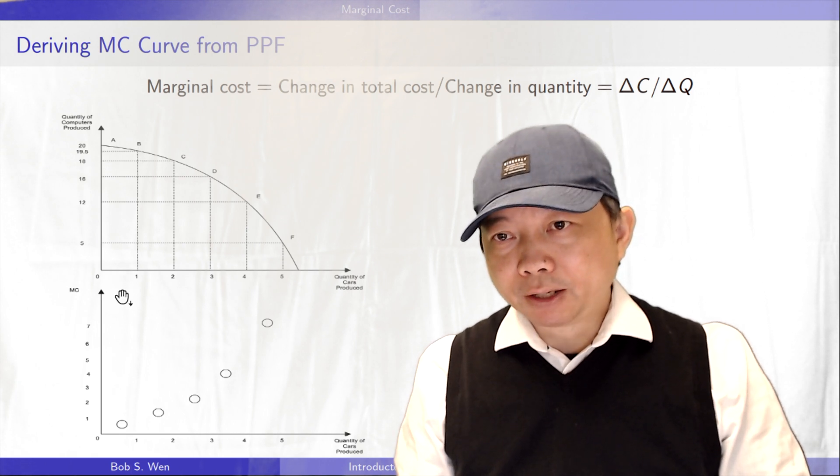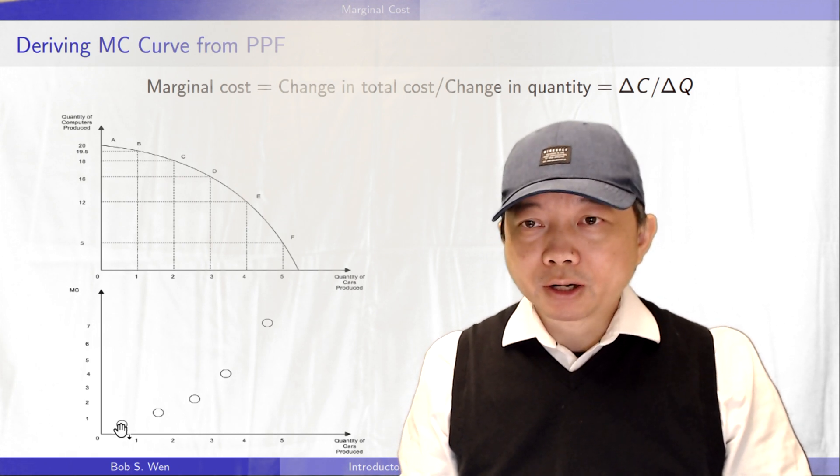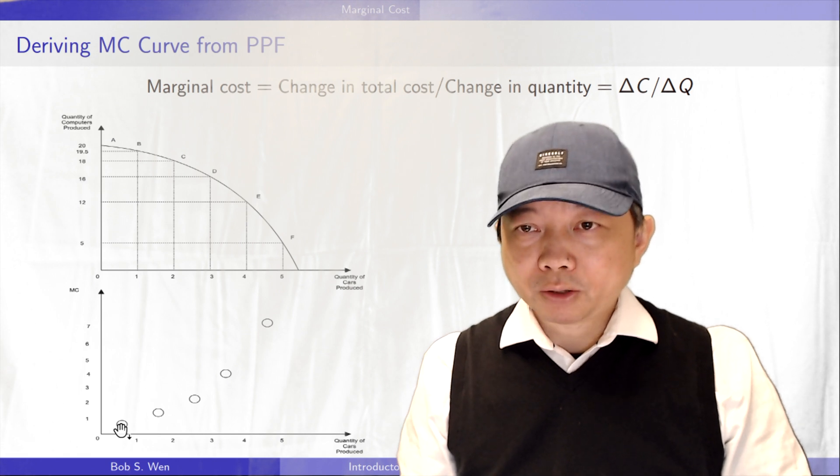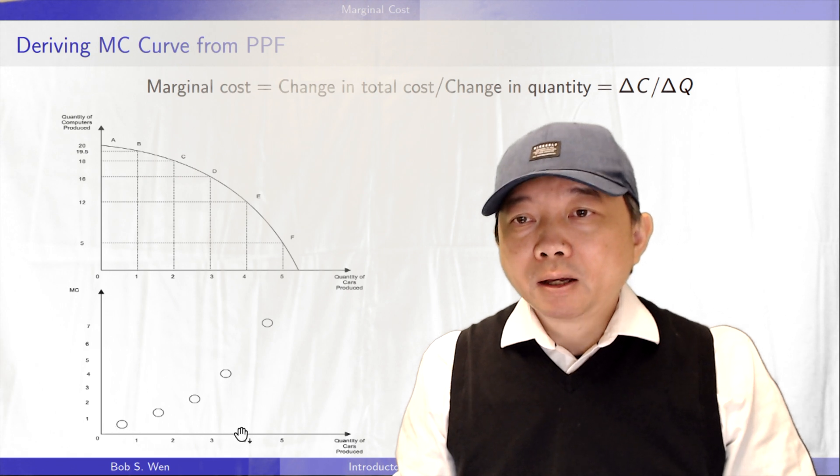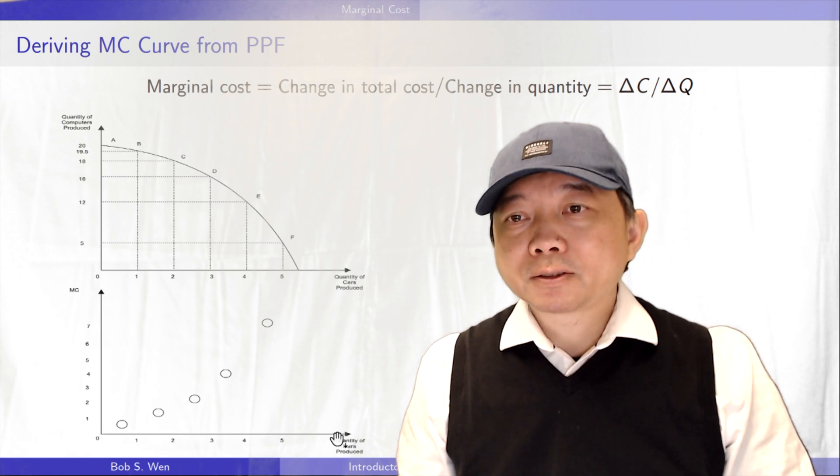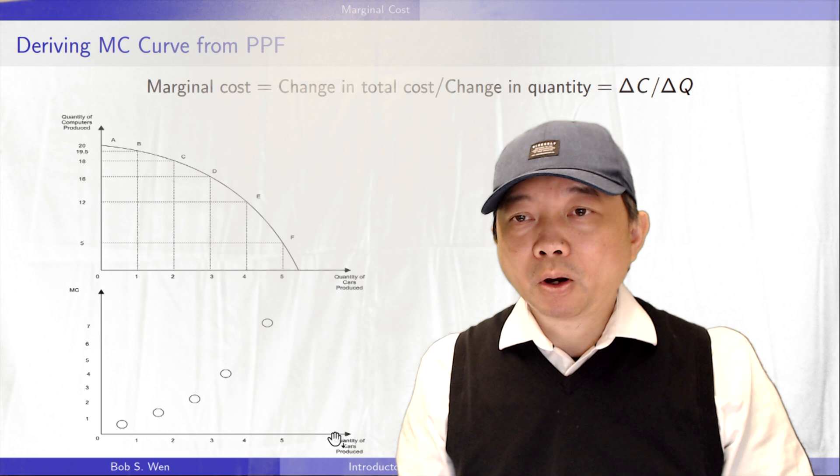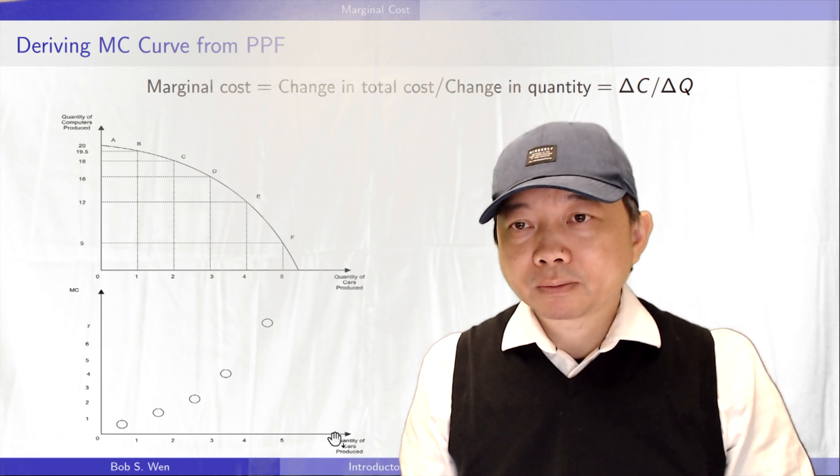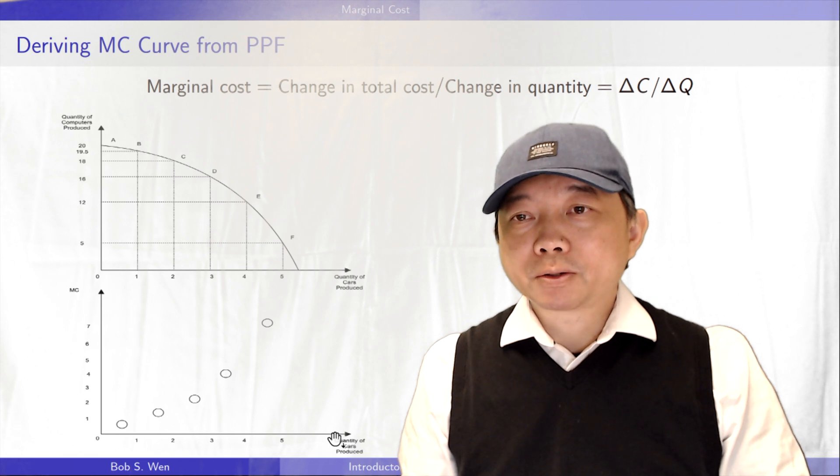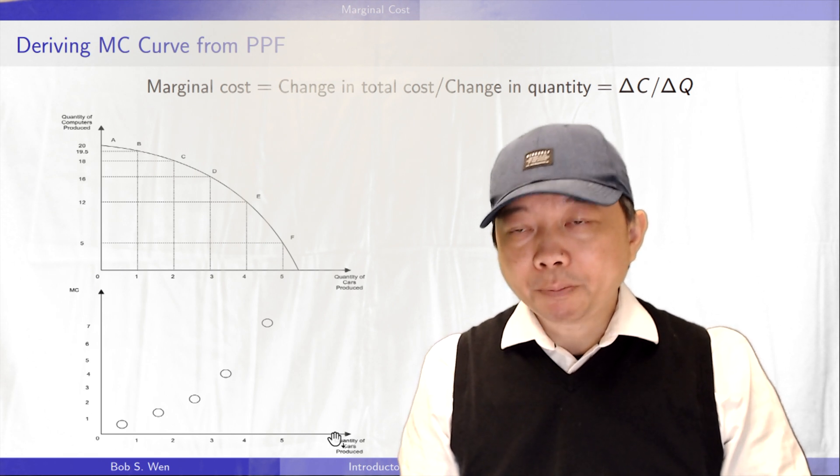We could calculate the slope of each point and draw the marginal cost curve. In the marginal cost graph, we put the number of cars on the x-axis and the marginal cost of producing each quantity of cars. The marginal cost is measured in terms of units of computers.